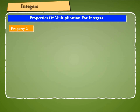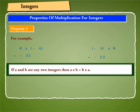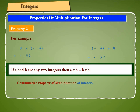Property 2: Let us multiply any two integers in different orders and see whether their products are the same. For example, 8 into minus 4 is equal to minus 32, and minus 4 into 8 is equal to minus 32. Thus, the product of any two integers remains the same, whatever be the order of multiplication. Hence, if A and B are any two integers, then A into B is equal to B into A. This is called the commutative property of multiplication of integers.